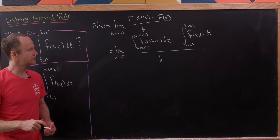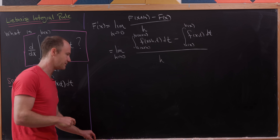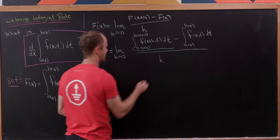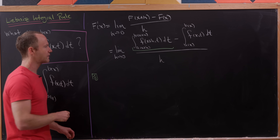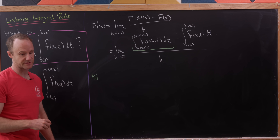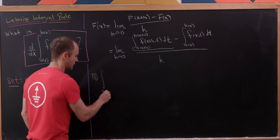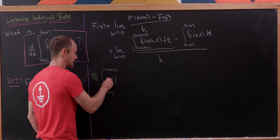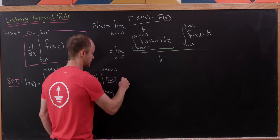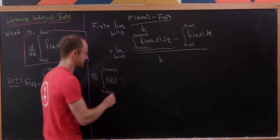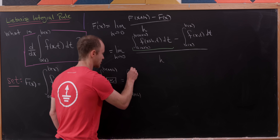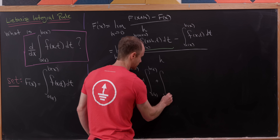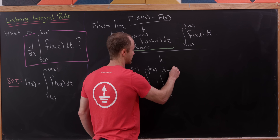What I'd like to do is really see how this first integral can be decomposed into simpler parts, exploring what we can do with the bounds of integration. We can split this up into three pieces: the integral from a(x+h) up to a(x), plus the integral from a(x) to b(x), and then plus the integral from b(x) up to b(x+h).